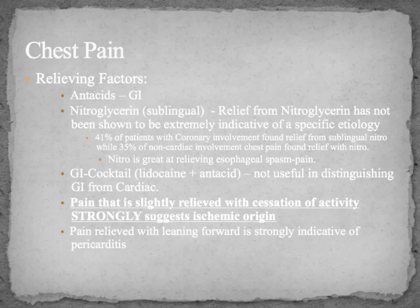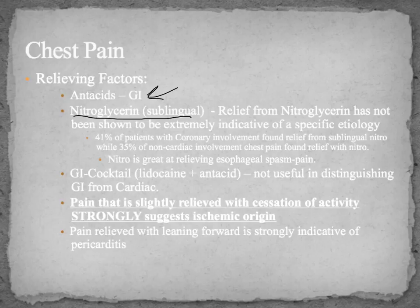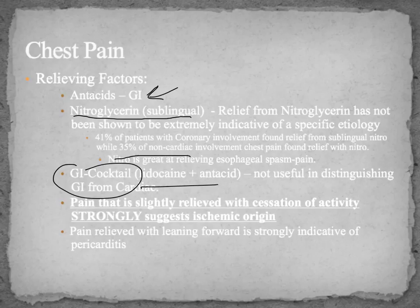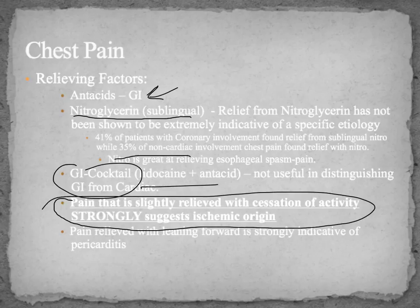Ask what makes things better. Does an antacid make it better? That's one of the key questions that can quickly rule down an MI and rule up a GI problem. Unfortunately, having relief from nitroglycerin hasn't been extremely effective at specifying the cause — 35% of non-cardiac chest pain found relief with nitro. Esophageal spasm is one example. The GI cocktail is also not very helpful. If the pain is slightly relieved with the cessation of activity, that's strongly suggestive of ischemic origin.